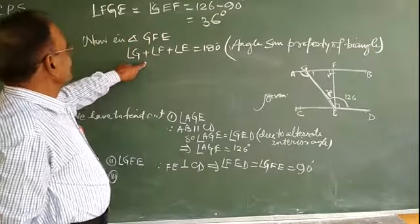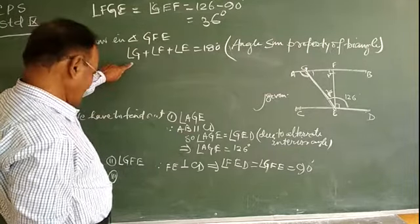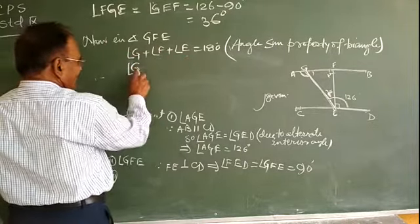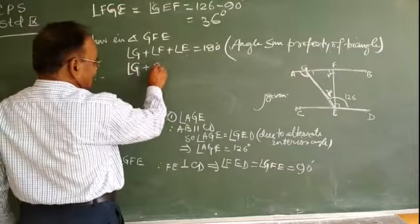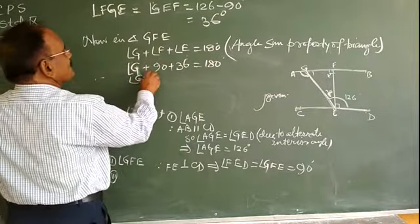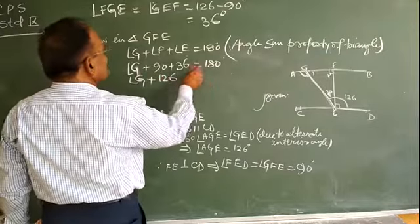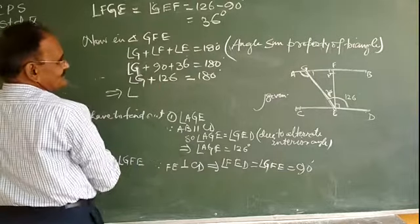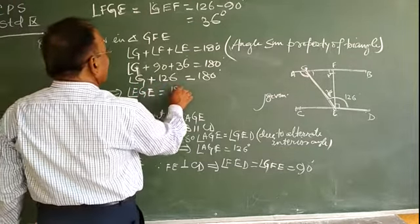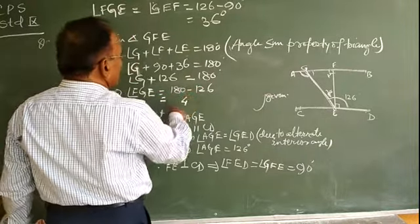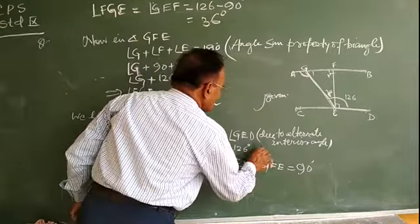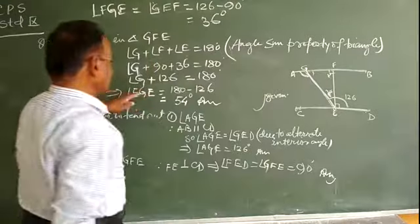Angle G plus angle F plus angle E equals 180 degrees. Angle F is 90 degrees and angle E is 36 degrees. So angle FGE is equal to 180 minus 126, which gives 54 degrees. This is the answer for the second part, and angle FGE equals 54 degrees completes question number 3.